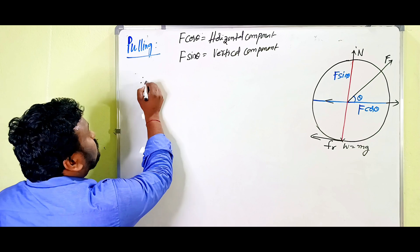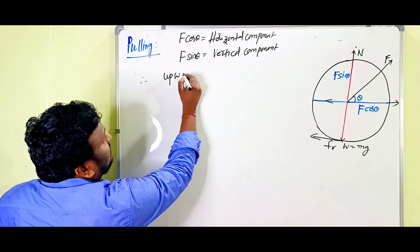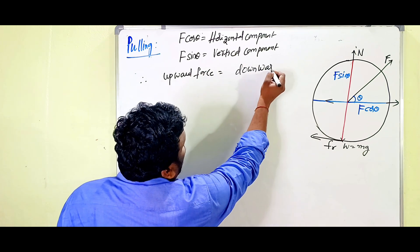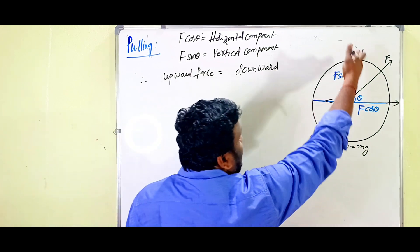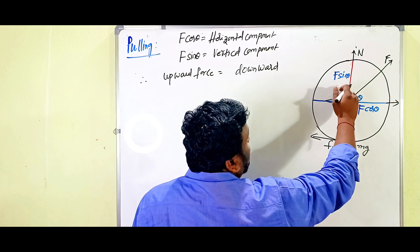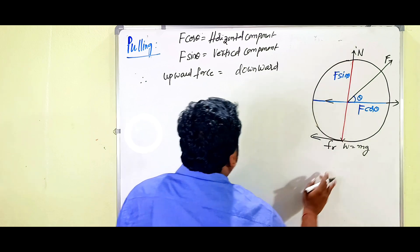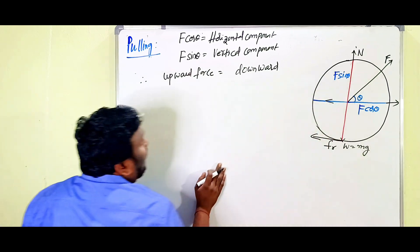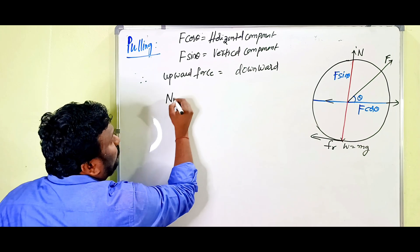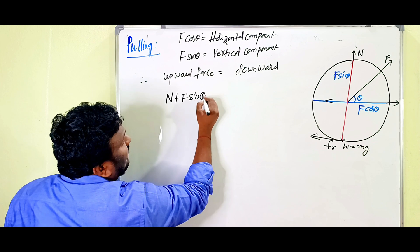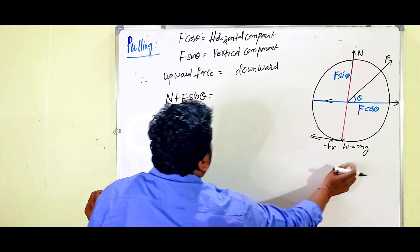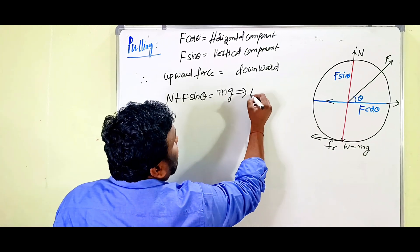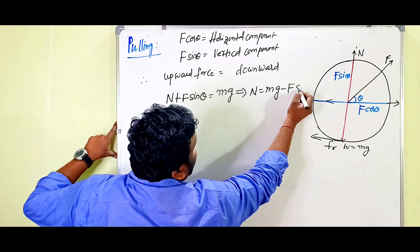In the pulling case, the upward forces acting are N and F sin theta, and the downward force is Mg. So the equation is: N plus F sin theta equals Mg. Therefore, N equals Mg minus F sin theta. This is the expression for normal force when pulling.